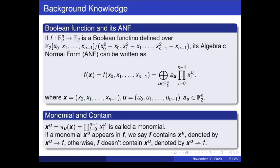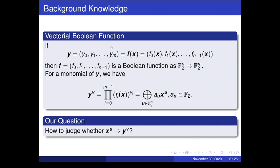Every Boolean function can be written as a sum of monomials, and x to u, or pi_u(x), is called a monomial of f. If x^u appears in f, we say f contains x^u, denoted by the arrow. Otherwise, we say f doesn't contain x^u, denoted by this notation. For a vector Boolean function sending x to y, a monomial of y can also be written as a polynomial of x. Our question is: how to judge whether or not x^u is contained by y_w?